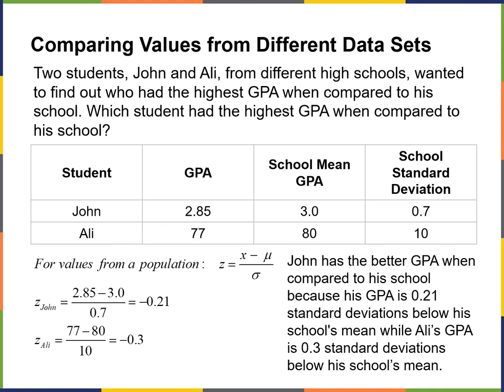John's Z score is negative 0.21 and Allie's is negative 0.3. So John has the better GPA when compared to his school because his GPA is 0.21 standard deviations below his school's mean, while Allie's GPA is 0.3 standard deviations below her school's mean. They're both not too far off from the mean of their school GPA — so average students.